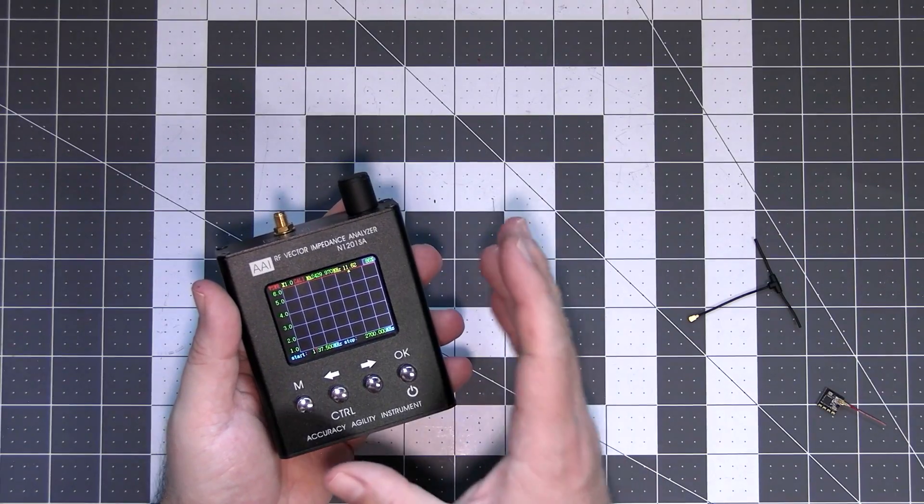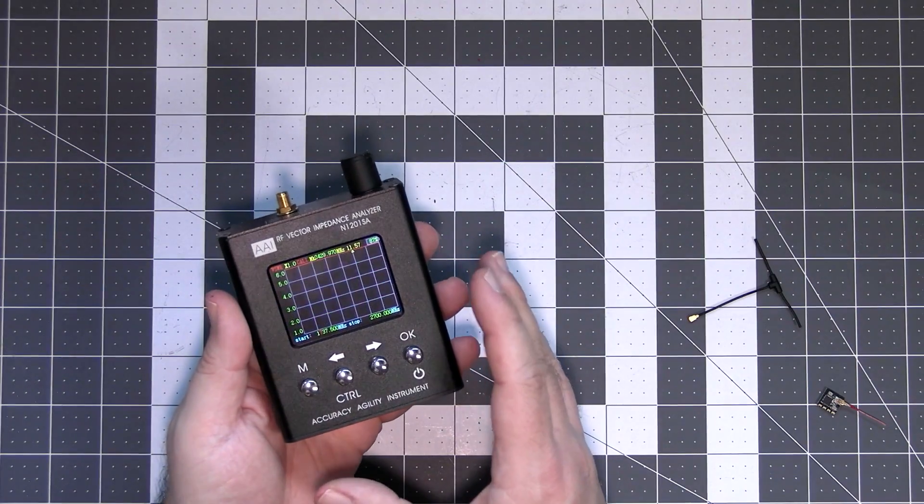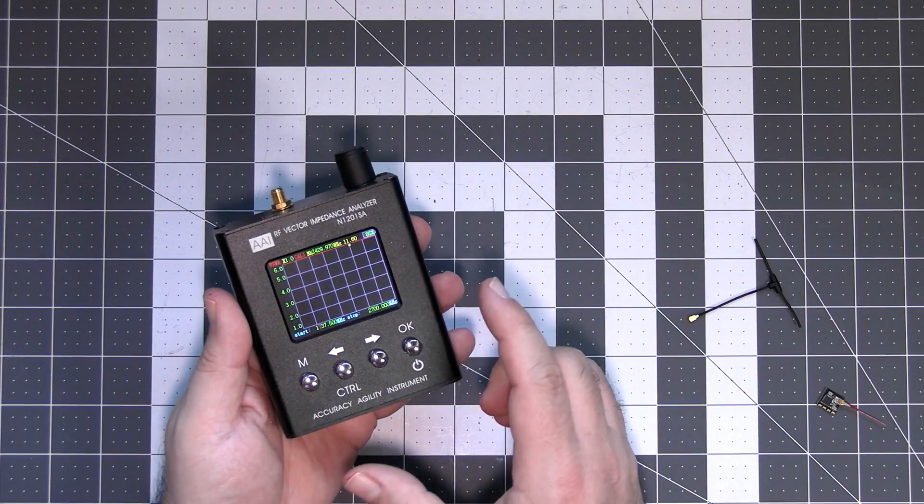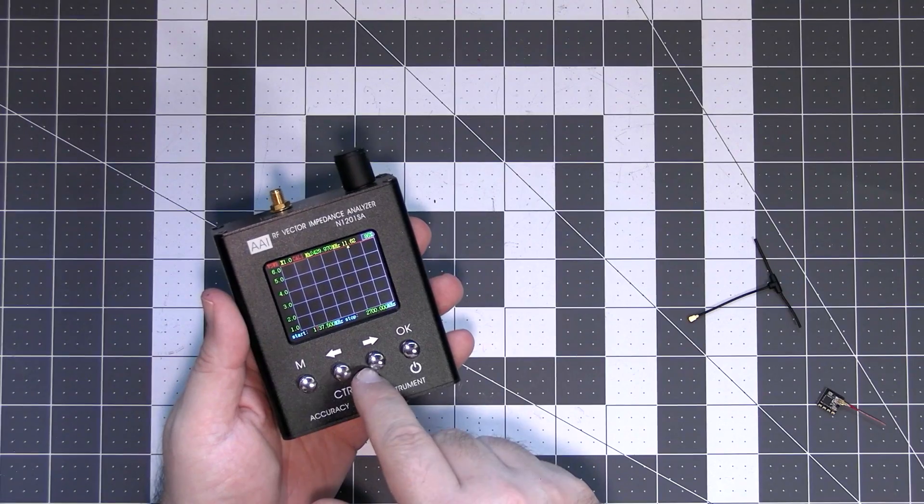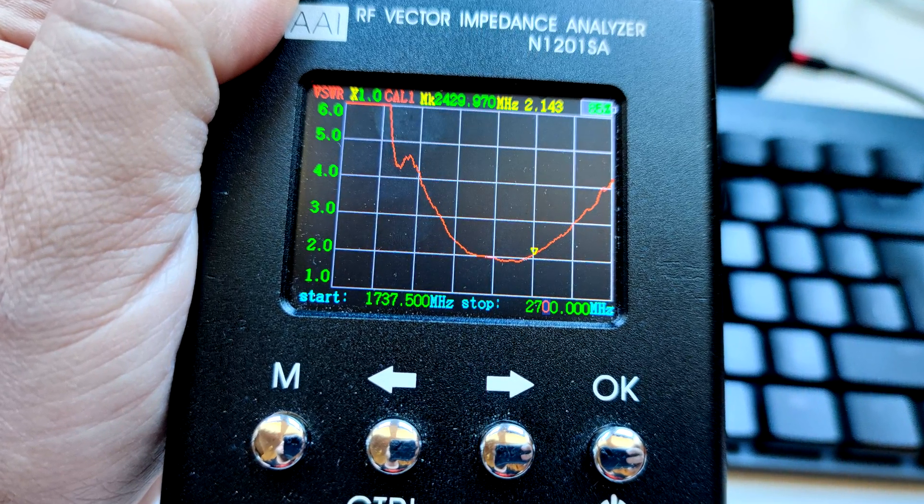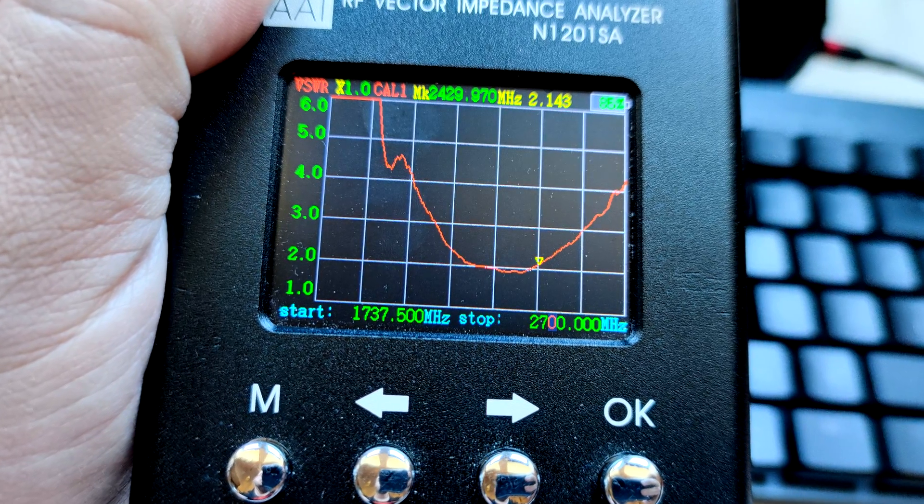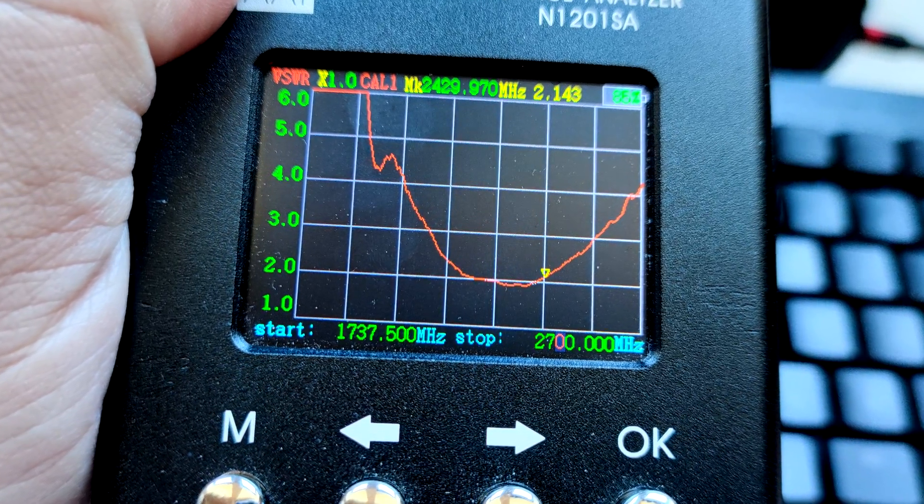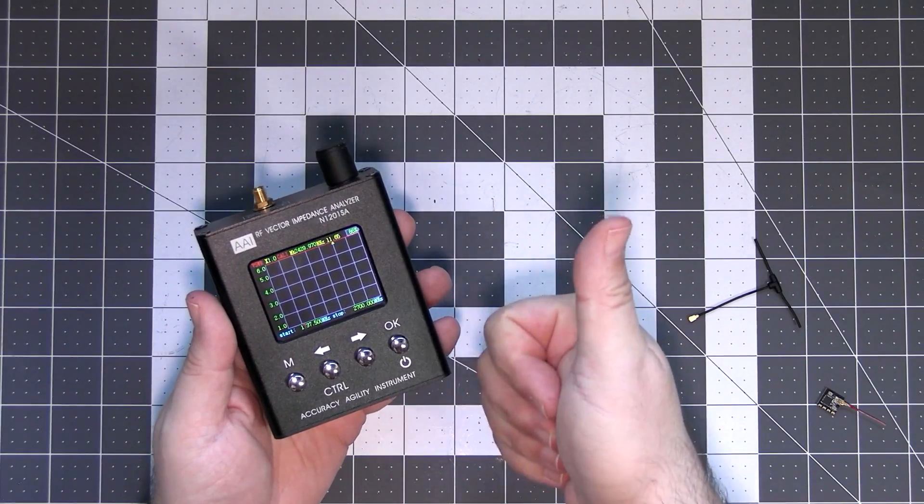You might ask the question, but is 20 millimeter the correct length of the active part of antenna? And the short answer is yes. I do own the VNA and I tested, I checked and with the pigtail I used, the 20 millimeter length of the active part of the antenna was exactly the length we needed.